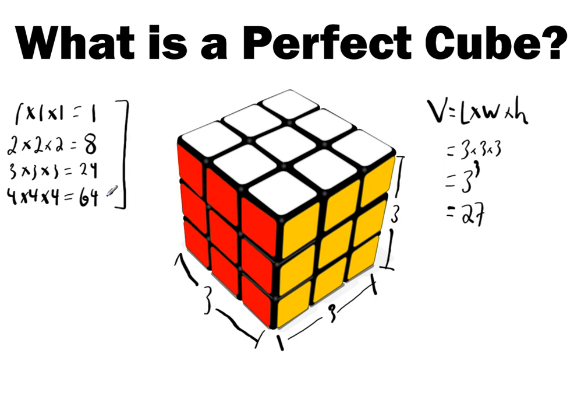So because they represent the volume of a cube with the same height, width, and length. So that's all a perfect cube is, is the volume of a cube with the same height, width, and length. And so one of the cool things about having perfect cubes.